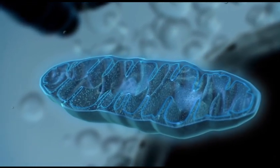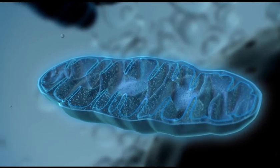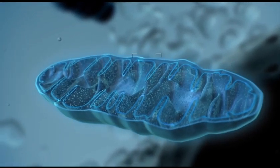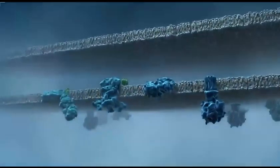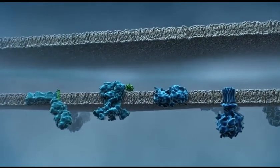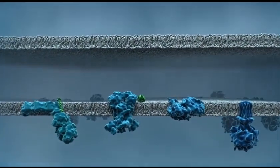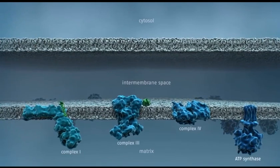ATP is generated at the inner membrane of mitochondria by an efficient mechanism called oxidative phosphorylation, involving several membrane protein complexes.